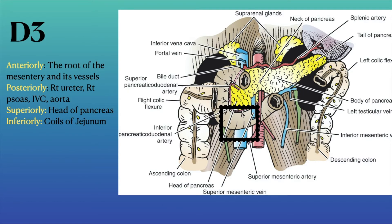The third part of the duodenum, which is the horizontal long part, is related anteriorly to the root of the mesentery and its vessels. Posteriorly to the right ureter, right psoas, IVC, and aorta. Superiorly to the head of the pancreas, and inferiorly to the coils of jejunum.